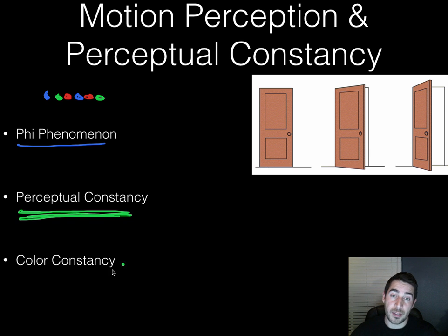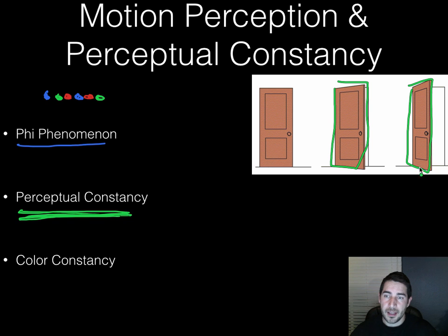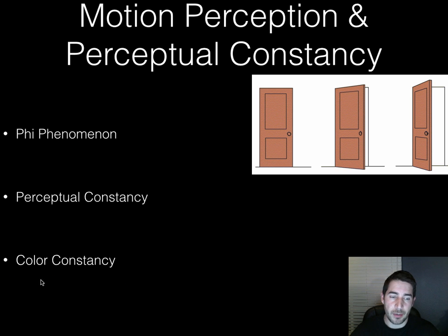Here's an example of perceptual constancy with a door. We know a door is supposed to be a rectangle, and even though it changes shape as it's opening, we still perceive it as a rectangle because we know what doors are supposed to look like — that's shape constancy. If you came from some strange land where doors were all round, like in the Hobbit, things might be different. But our top-down processing — our previous knowledge — tells us doors are rectangles, so they stay rectangles.